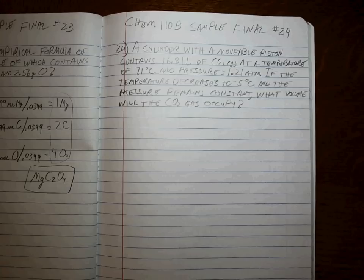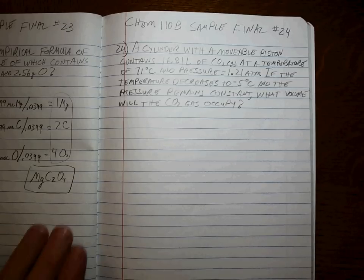A cylinder with a movable piston contains 16.81 liters of CO2 gas at 71 degrees C and 1.21 atmospheres of pressure. If the temperature decreases to negative 5C and the pressure remains constant, what is the new volume?